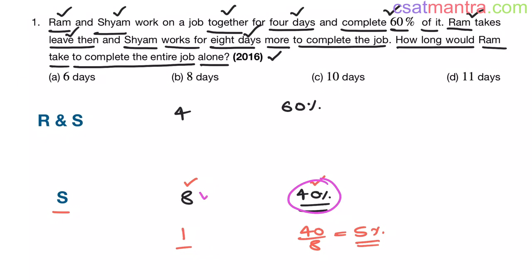40% in 8 days. In 1 day, work done is total work by number of days. That is 40 by 8, which is 5%. Now, Shyam does 5% of the work in 1 day. In 4 days, how much percentage of work has he done?